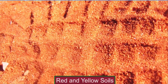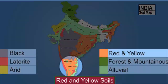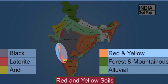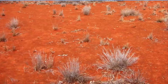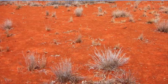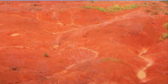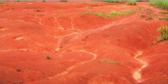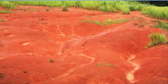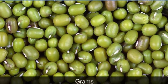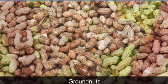Red and yellow soils are found in the southern and eastern parts of the Deccan plateau, the Southern Granitic Plains, along the Western Ghats, and some parts of Orissa and Chhattisgarh. The red colour is due to the presence of iron in the rocks from which the soil was formed, and it appears yellow when wet. The high iron content makes this type of soil good for cultivating various types of grams, groundnuts, and castor seeds.